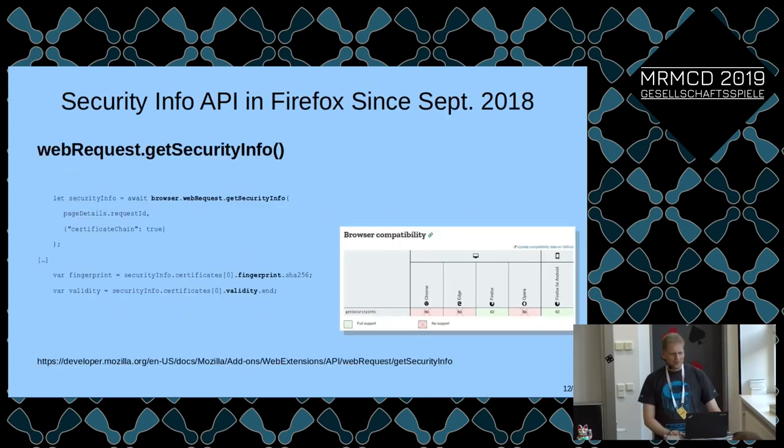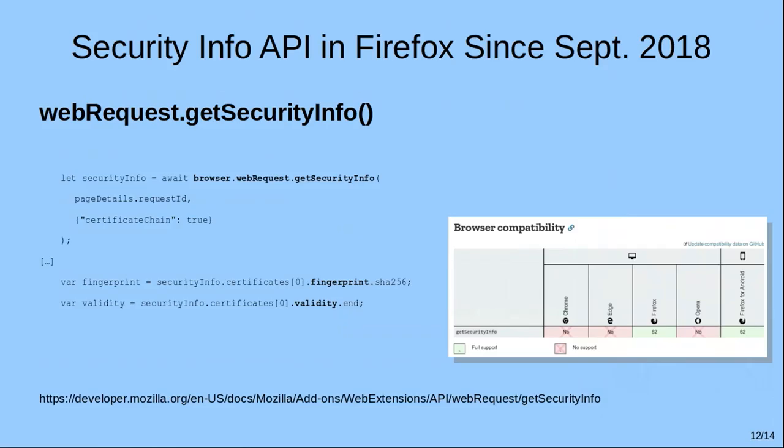The cool thing is, in September 2018 Mozilla added a new API called WebRequestGetSecurityInfo. What that does is, together with a couple of other APIs, for every connection that Firefox establishes, you can have a look at the security info and certificate, and abort loading or let the web page download depending on what certificate is inside. When I saw they introduced the GetSecurityInfo API, I thought: now it's time for a Firefox add-on again, so I can do my own certificate pinning.